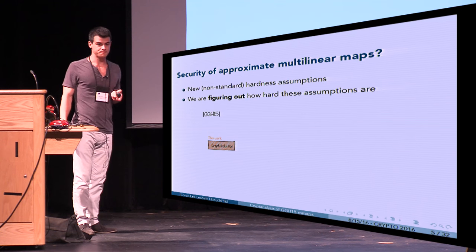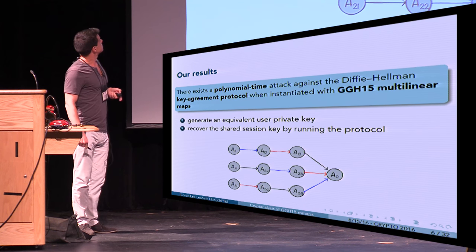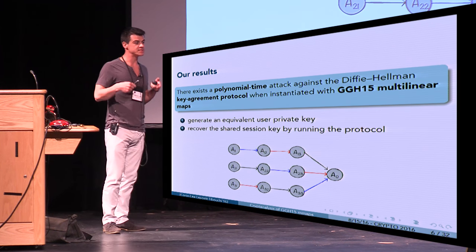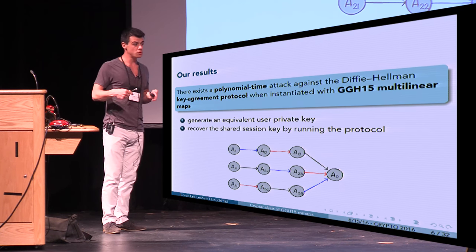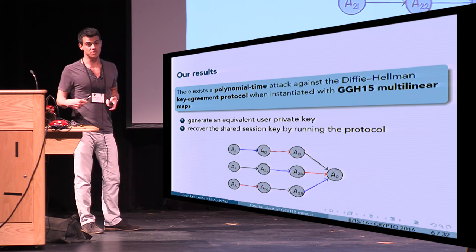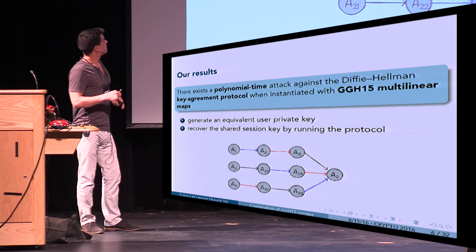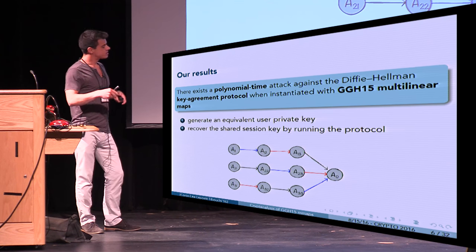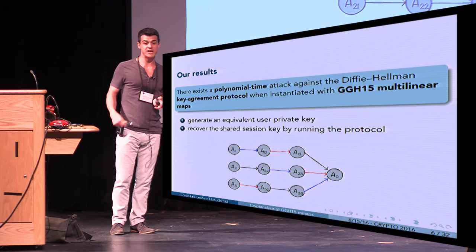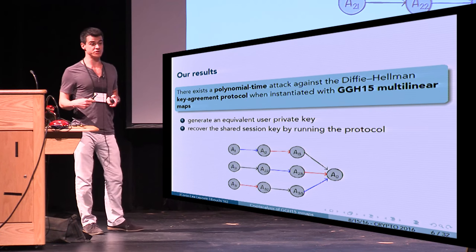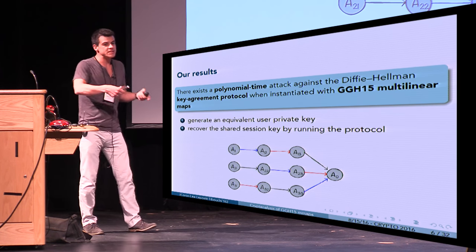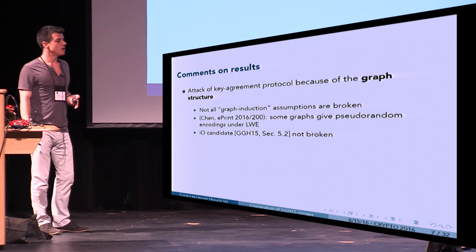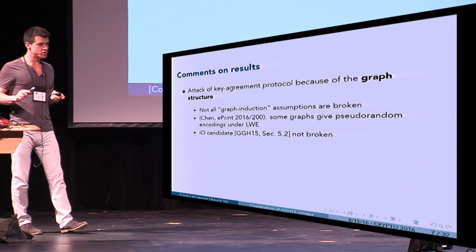Our result is the following: there exists a polynomial-time attack against the deployed key agreement protocol when instantiated with the GGH15 multilinear maps. We look at a protocol in progress, generate an equivalent encoding for one of the users, and use this encoding in the key exchange to recover the secret key.